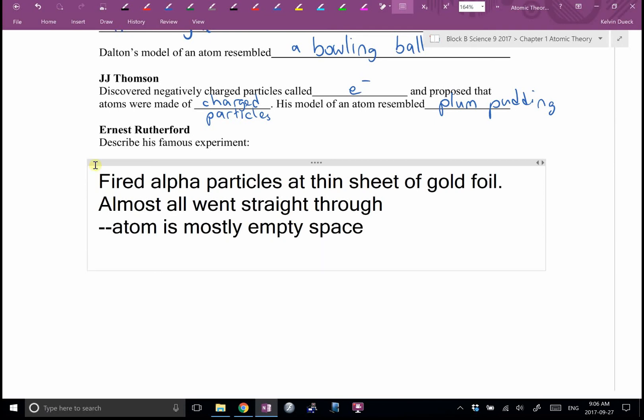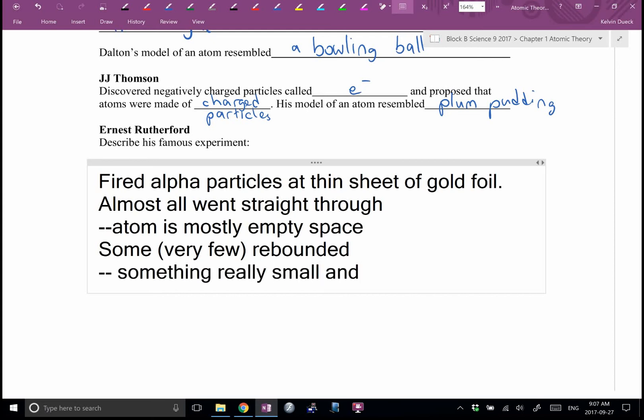Now, the second thing that happened, Javin, you're right. Some, very few, rebounded. Sometimes straight back, sometimes at an angle. I showed you a video of the Rutherford experiment. You missed out on it, Dylan. Sorry. What did that allow them to conclude? Really, really small. So, something really small. I'm going to say, I can't use the word heavy because nucleuses are really, really light. But, for their size, they're heavy. And, we have a word for that. We call it dense. Bear with me. We're going to keep going until we get interrupted.